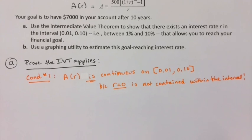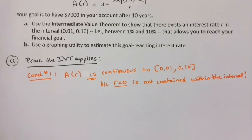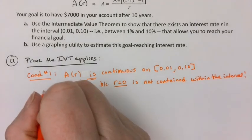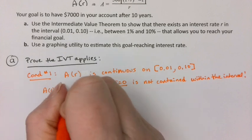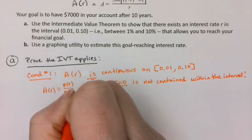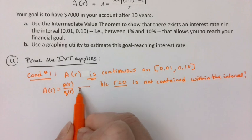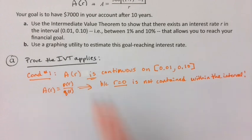That function must be continuous everywhere else because A of R equals P of R over Q of R — they're both polynomials. That means the only value that can't exist is R = 0, and we have no problems.